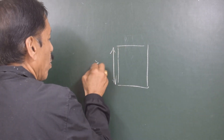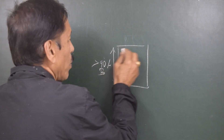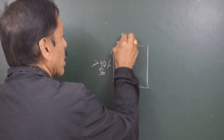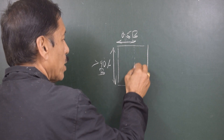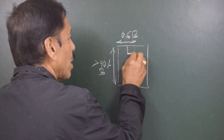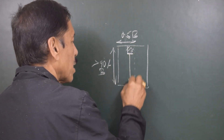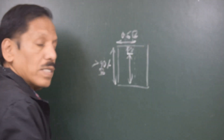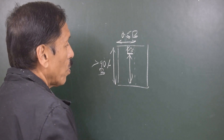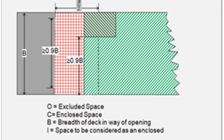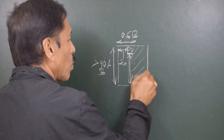Suppose the opening is more than 90% of B. Normally 50% of the breadth is allowed as excluded space, but suppose you have an enclosed locker there so that the transverse width is not 90% of the breadth or more — only that portion up to where the 90% condition is maintained is allowed as excluded space. The rest of the entire space will be considered as enclosed space.